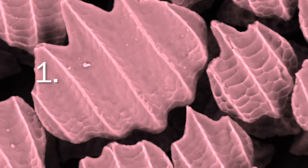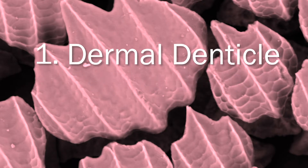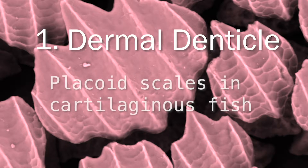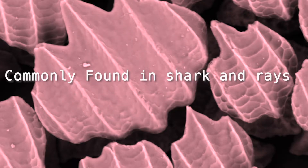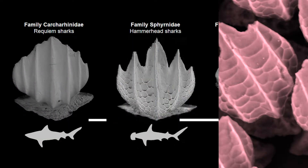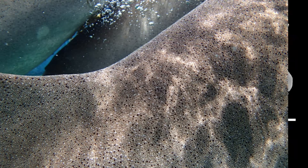Dermal denticle is commonly associated with placoid scales in cartilaginous fish. It is structurally similar to vertebrate teeth and is commonly found in species like sharks and rays. Sharks don't have typical scales that normal bony fish do — their skin is covered with dermal denticles.